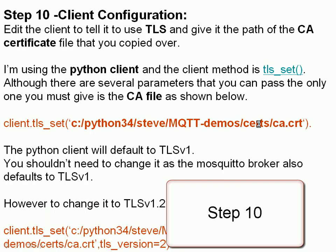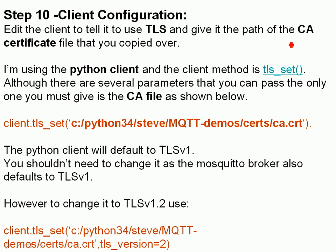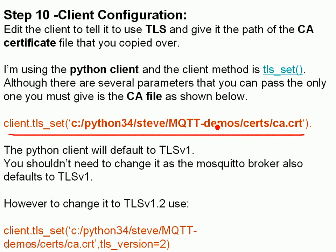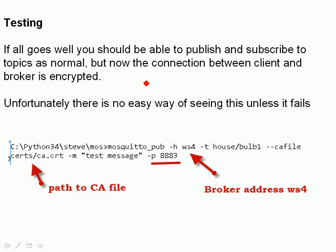Step nine: edit the client to tell it to use TLS and give it the path to the CA certificate file. For Python clients, you need to use the tls_set command — there's an example here showing a Python client running on Windows. For testing: if all goes well you should be able to publish and subscribe to topics as normal, but now the connection will be encrypted. Unfortunately you can't easily see whether it's encrypted — the only real way of knowing is when it fails.